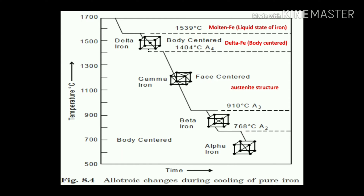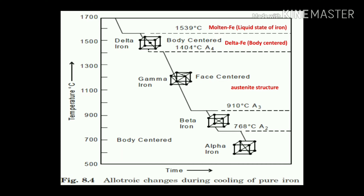As seen from the diagram, above 768 degrees centigrade — above the A2 temperature line — gamma austenite converts into beta iron. Around 723 degrees centigrade, the beta iron converts into the alpha phase of iron, which has a BCC structure. So as shown from the allotropy of iron, different temperatures yield different structures of iron, and those different structures have different behaviors and different properties.